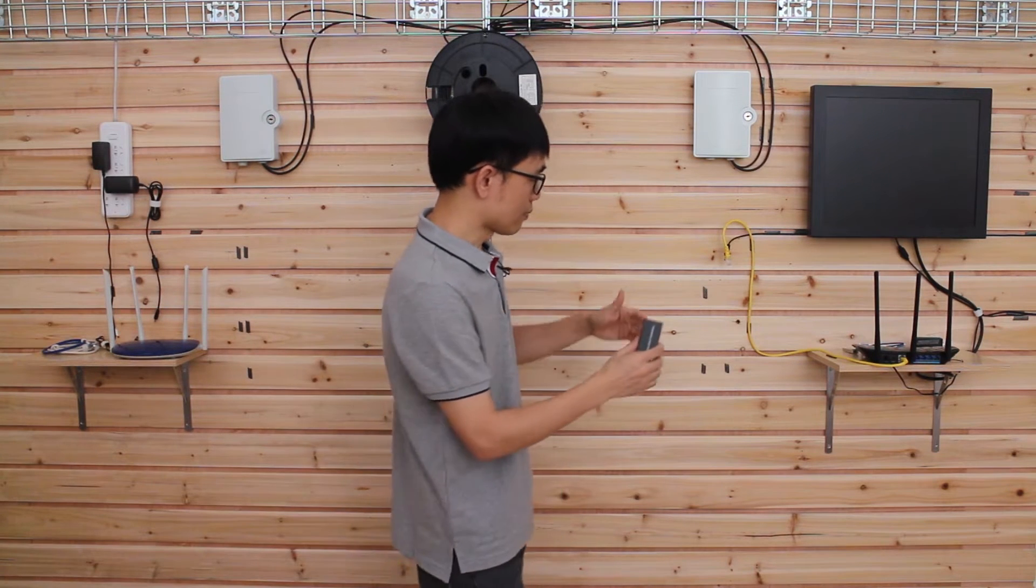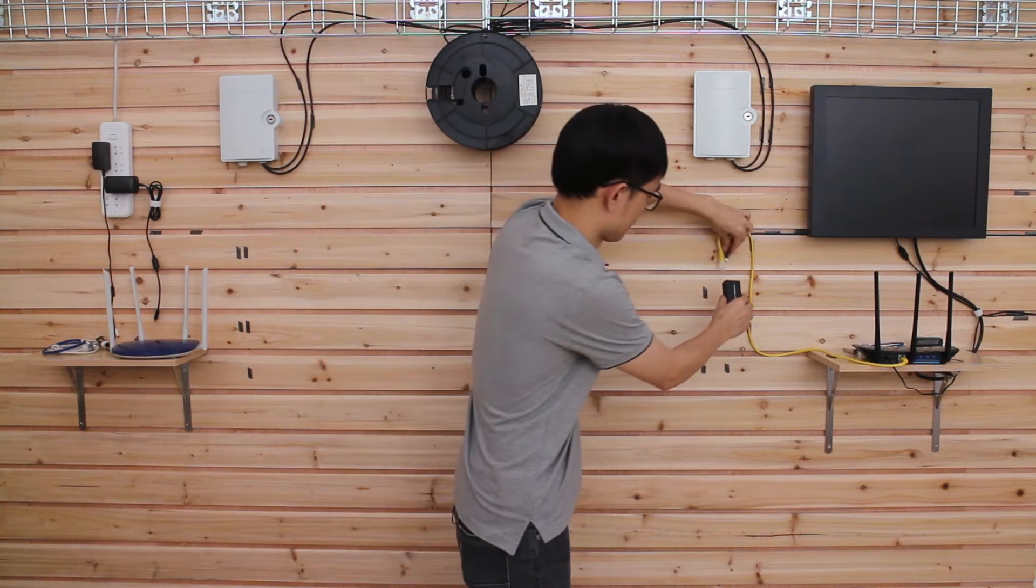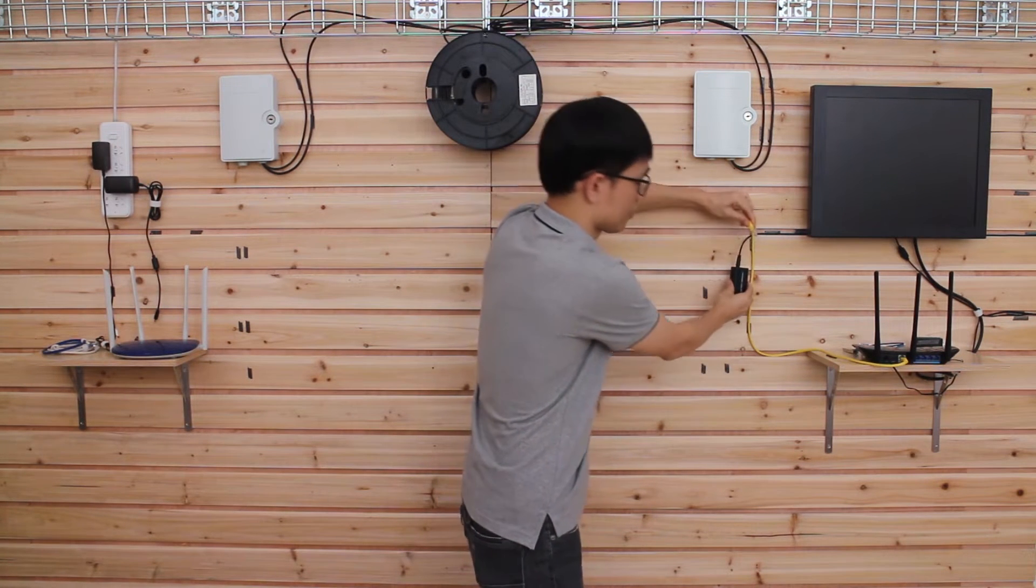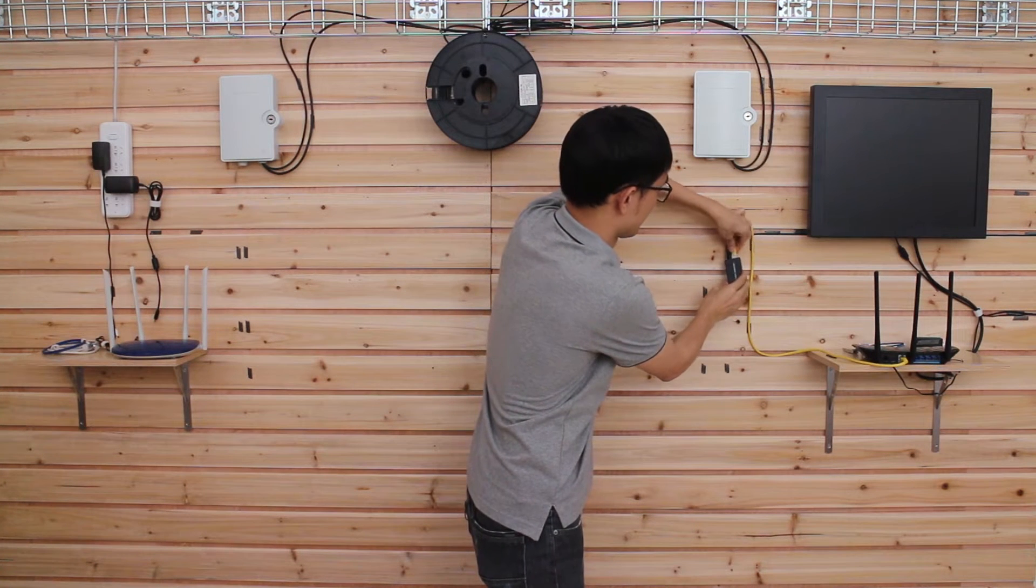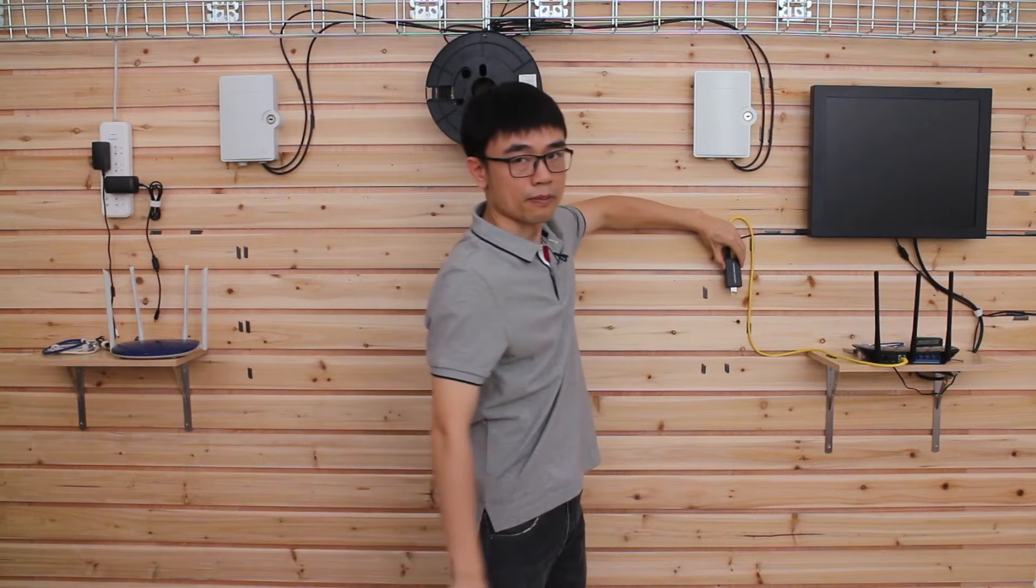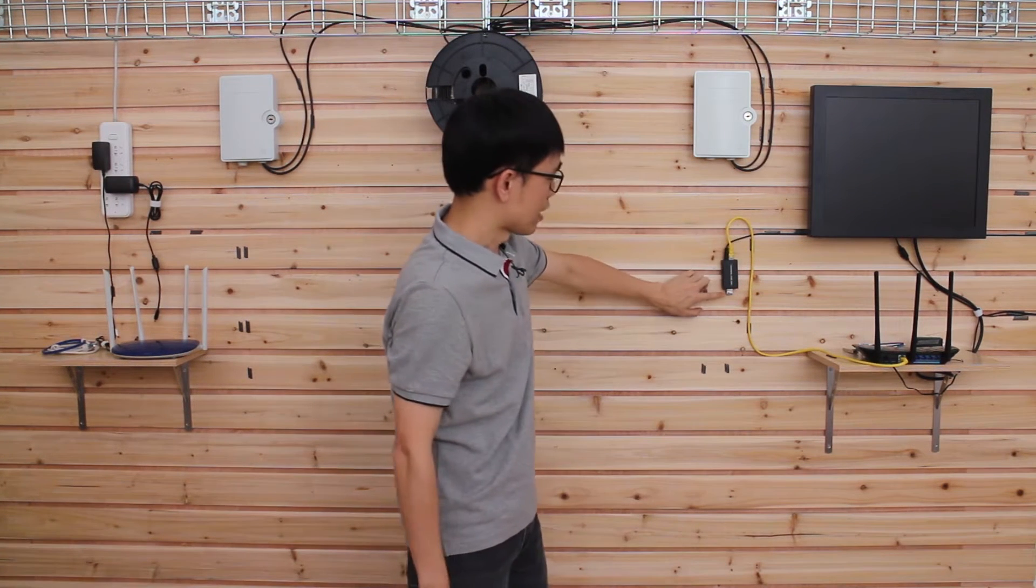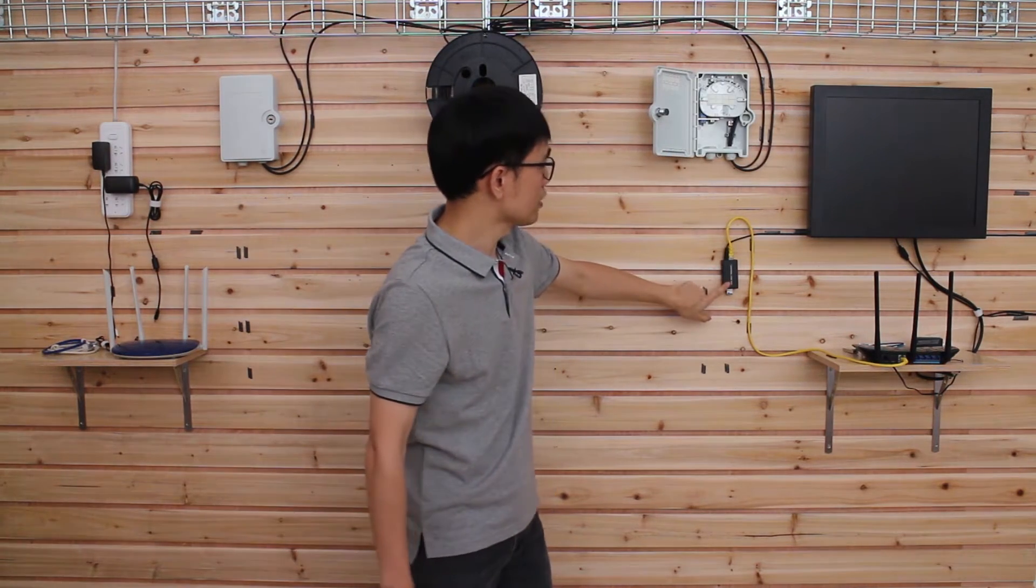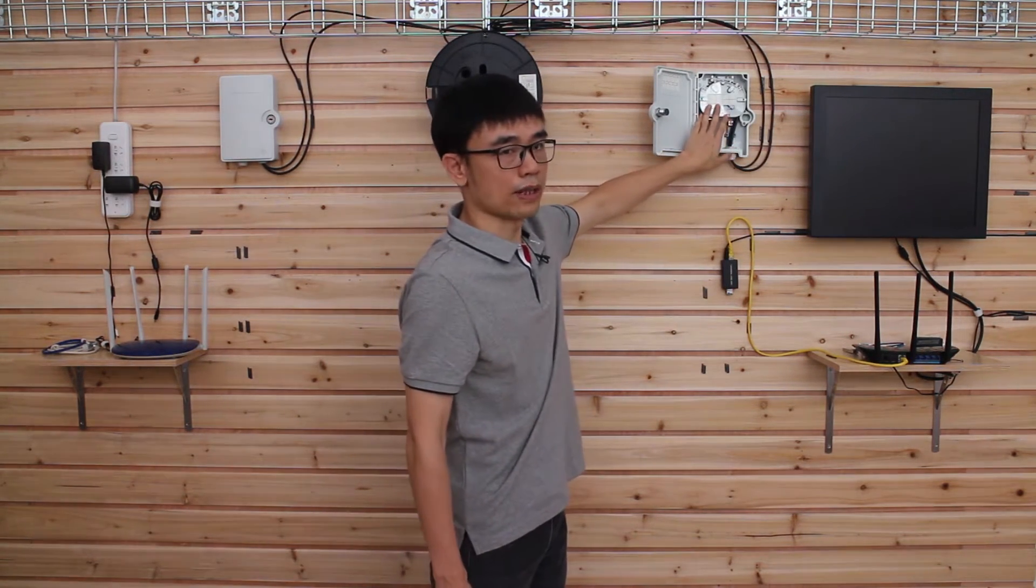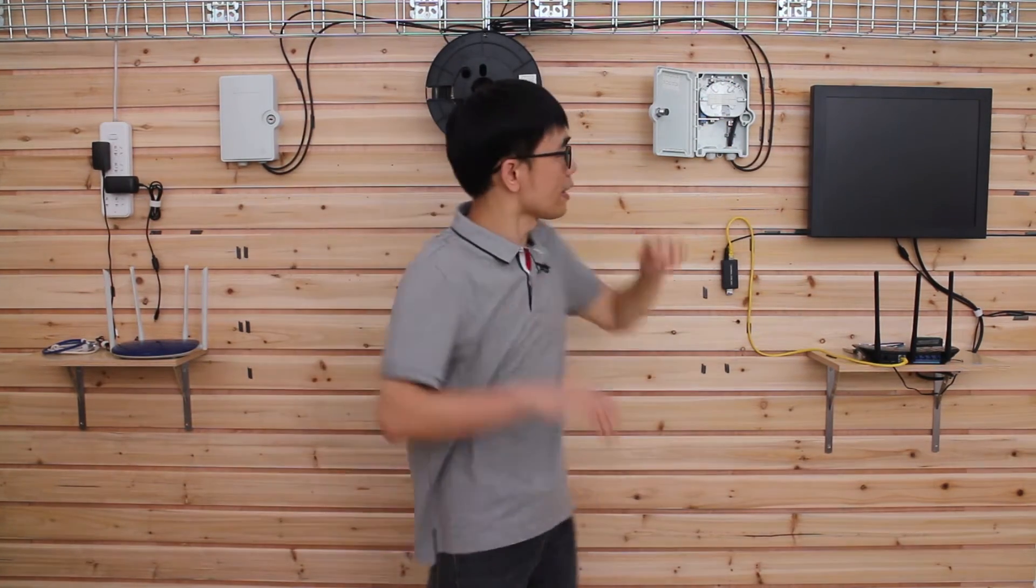Now let me power up this media converter. It uses DC power. This is the short patch cord coming from the first router. Now we got the data for the media converter. From here, I'm going to use the short patch cord to link the media converter to the fiber optic manager box. You can see the fiber optic cable is ready between point A and point B.